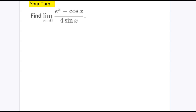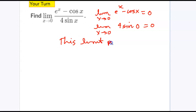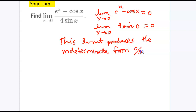I encourage you to pause the video and give this one a try. Let's first do the limit as x approaches 0 of e^x minus cos(x). This is e^0 which is 1, minus cos(0) which is 1, so this is 0. And the limit as x approaches 0 of 4 sin(x), which is also 0. So this limit produces the indeterminate form of 0 over 0. Therefore, L'Hôpital's rule applies.